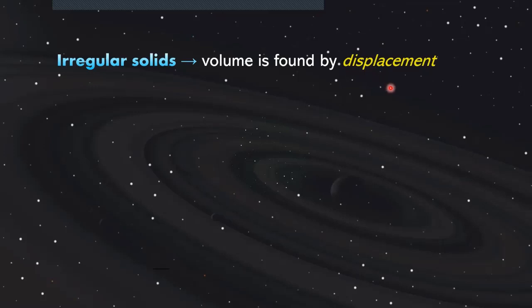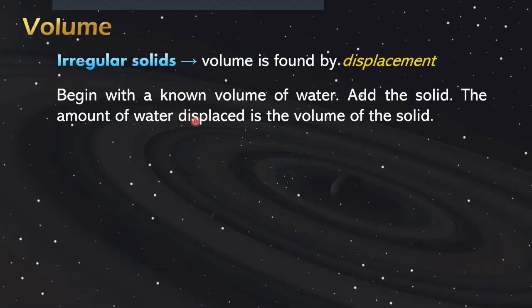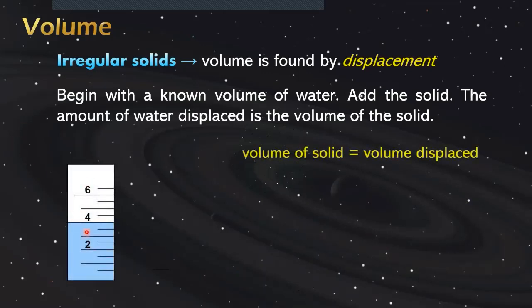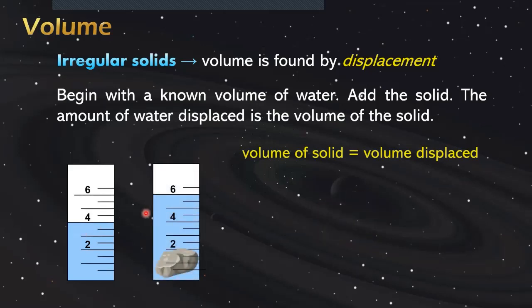To measure irregular solids, volume is found by displacement. We begin with a known volume of water, add the irregular solid, and the amount of water displaced is the volume of the solid. Based on the illustration, the volume of water is four cubic centimeters, and we want to know the volume of this stone as our irregular solid.